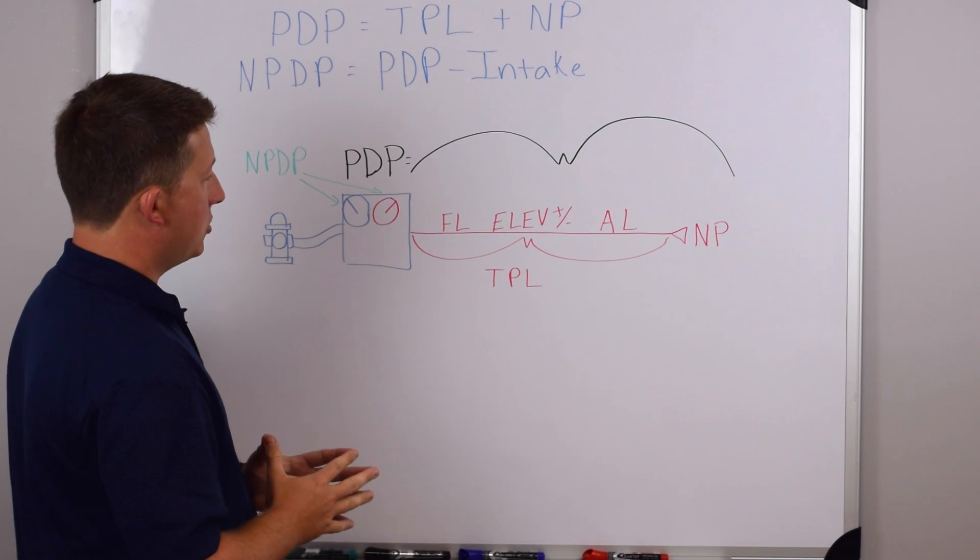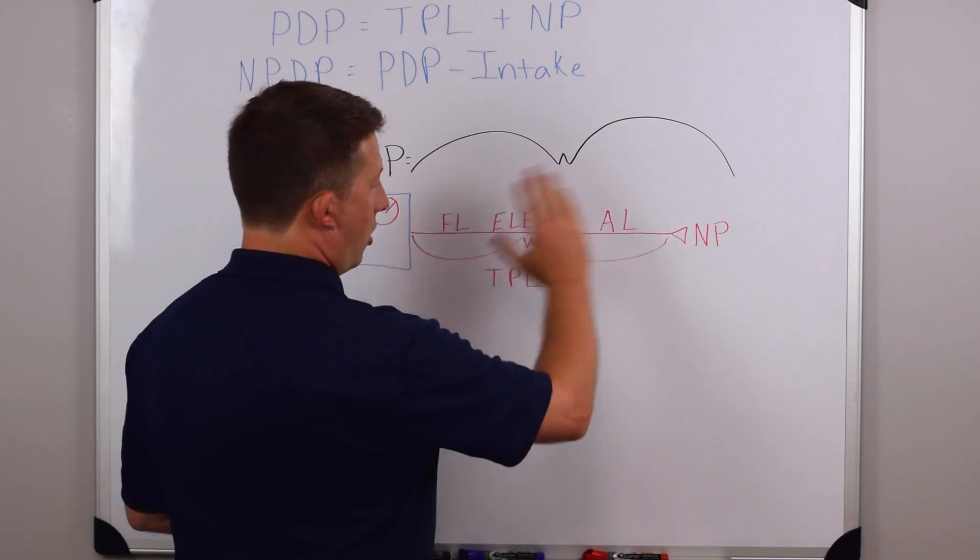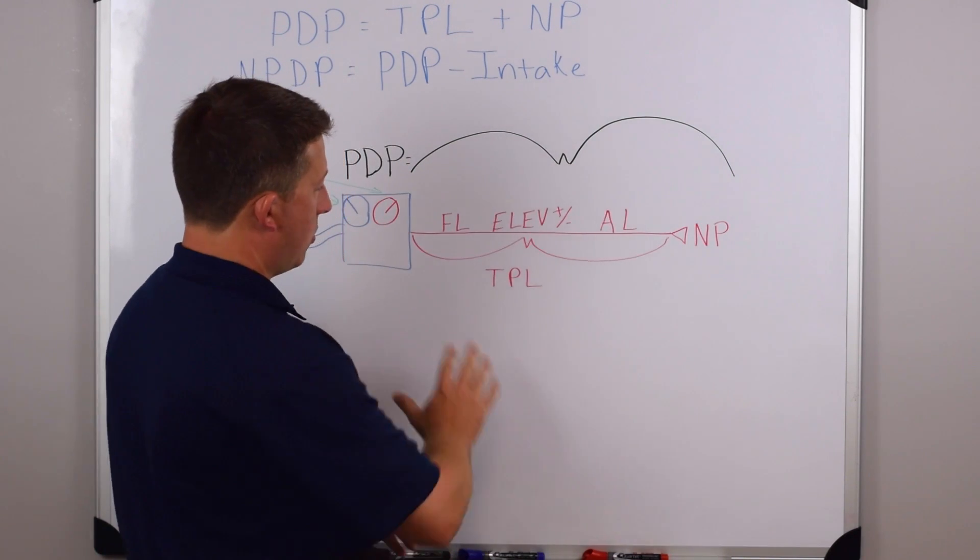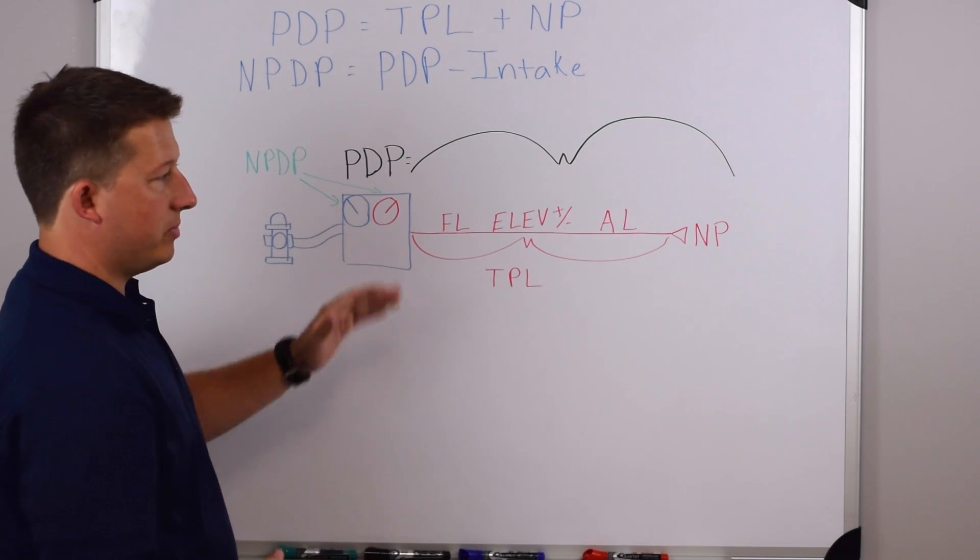When we look at the pump discharge pressure, pump discharge pressure is everything from the pump all the way to the end of the nozzle. All of this stuff that's summed together, that's added together, equals our pump discharge pressure.